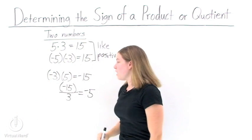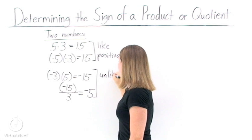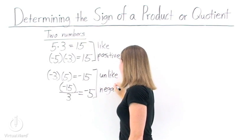So if you're multiplying and dividing two numbers together that have different or unlike signs, your answer is going to be a negative number.